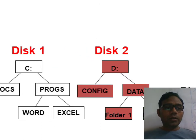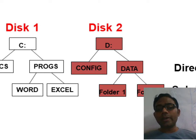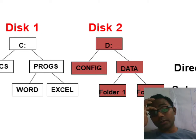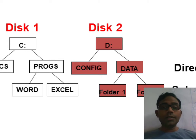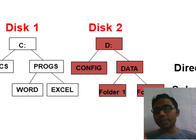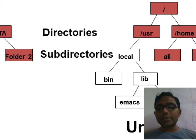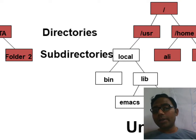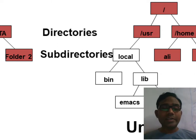In the Windows file system, drives like C and D are called disks. The C drive holds documents and programs like Word and Excel. The D drive holds configuration data and data files organized into folders. In Linux/Unix, the root is represented by slash (/), with subdirectories like /usr (containing local, bin, lib, emacs, x11) and /home (containing user-defined directories like ali and nihar).